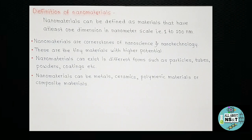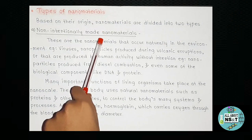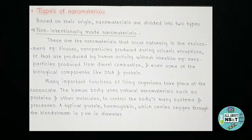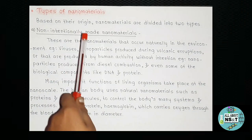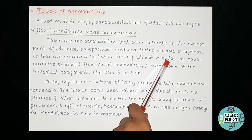Now let's take a look at their types. Based on their origin, nanomaterials are divided into two types: non-intentionally made nanomaterials and intentionally made nanomaterials. Firstly, let's take a look at non-intentionally made nanomaterials. These are the nanomaterials that occur naturally in the environment — for example, viruses, nanoparticles produced during volcanic eruptions, or produced by human activity without intention.